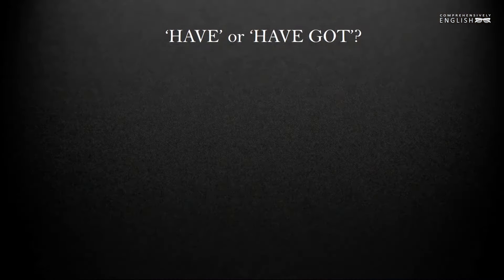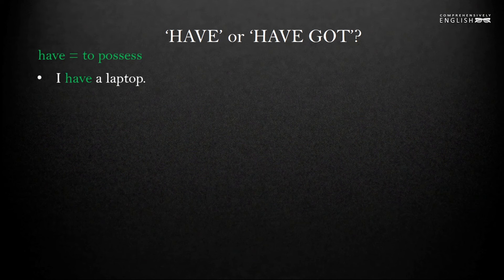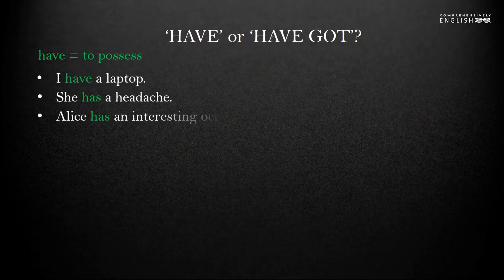Have and have got. Have means to possess. We use the verb have to speak about things that we possess, to speak about our relationships, characteristics or illnesses. For instance, we can say I have a laptop, she has a headache, Alice has an interesting occupation, Tim had a scooter when he lived in Naples.